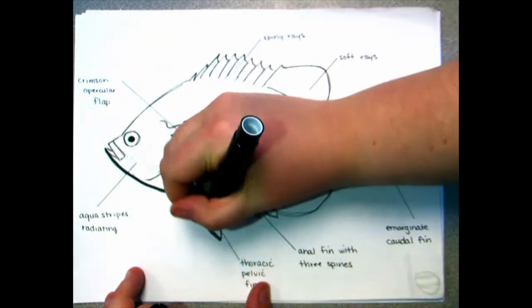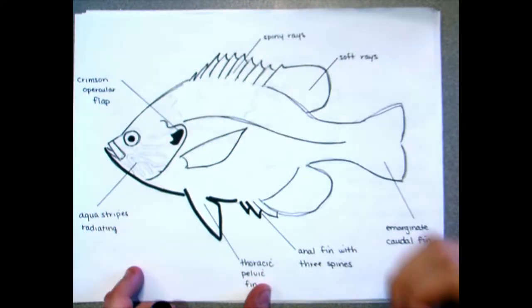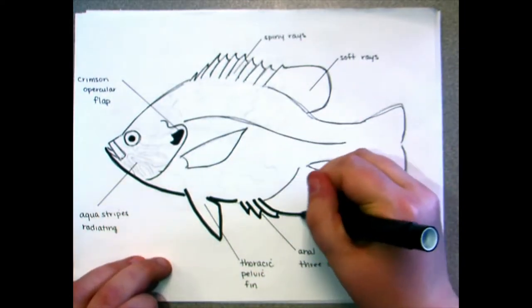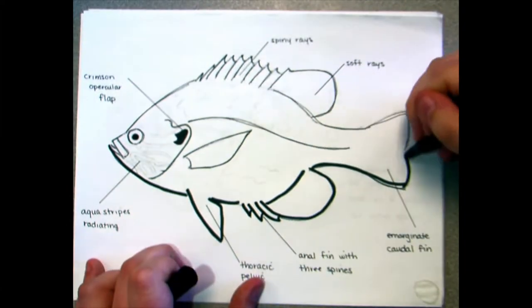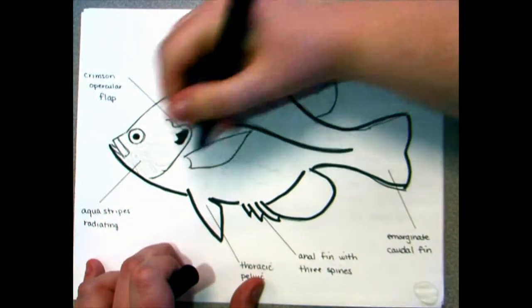The pumpkin seed sunfish belongs to the family Centrarchidae. Its Latin name, Lepomis gibbosus, refers to its scaled operculum cover and its deep body shape. Pumpkin seed are deep-bodied, compressive form fish. They are typically 10 centimeters long and weigh less than a pound.